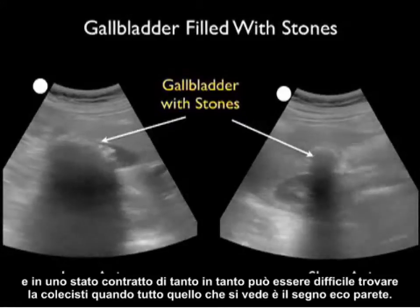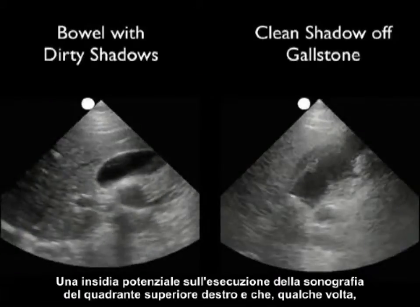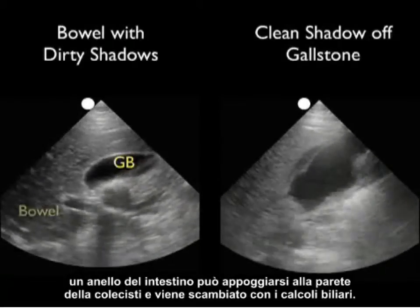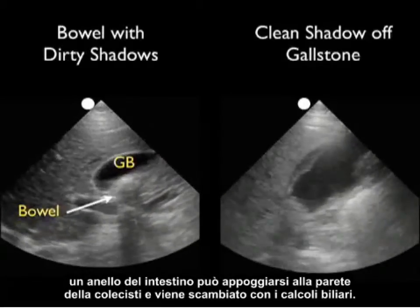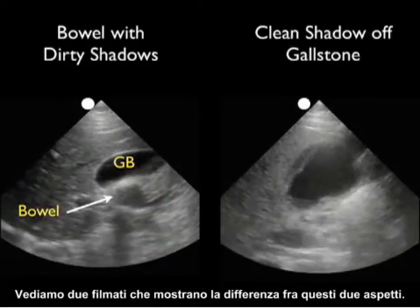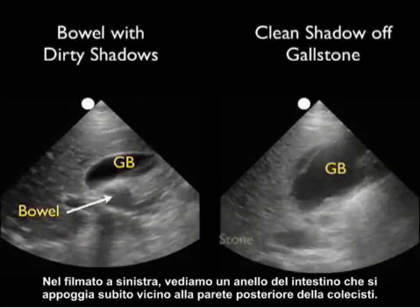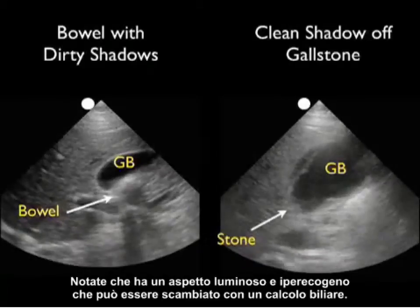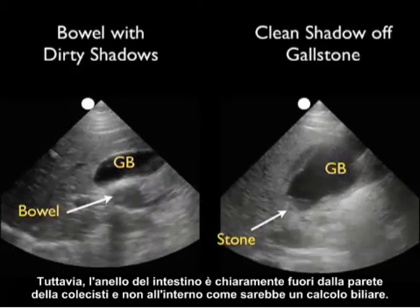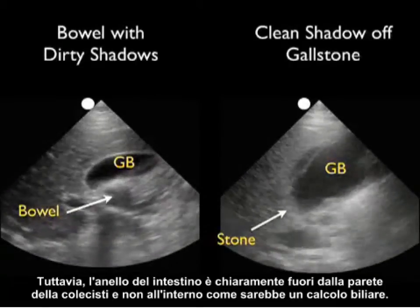One potential pitfall in right upper quadrant sonography is that a loop of bowel may come right up against the gallbladder wall and be mistaken for a gallstone. In the left video clip, we see a loop of bowel against the posterior wall of the gallbladder with a bright hyperechoic appearance that could be mistaken for a gallstone. However, the loop of bowel is clearly outside the gallbladder wall, not inside as a gallstone would be.